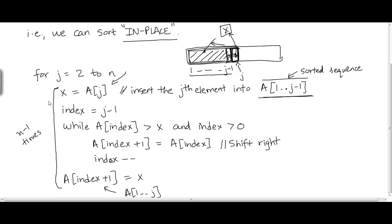If you look at each of these individual statements, let's take this statement: x equal to a of j. When a compiler translates this instruction into assembly language, we're going to have a few assembly language instructions generated from this one statement. We don't know exactly how many, but we know it's going to be some small number of instructions. Likewise, if you look at the line index equal to j-1, in assembly language we'll need to do a subtract operation and then assign the result to this variable.